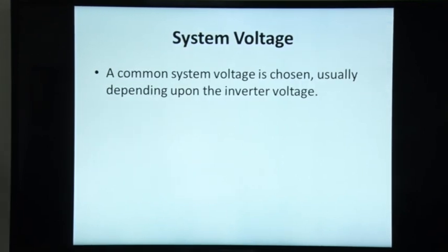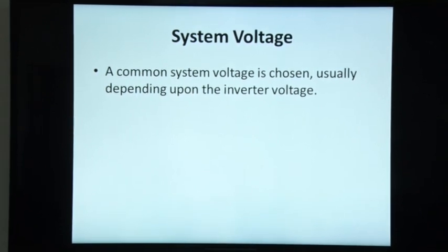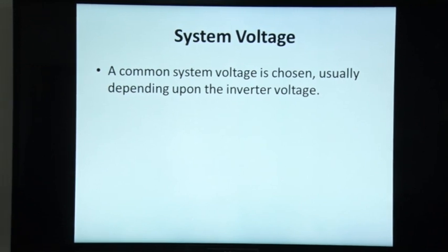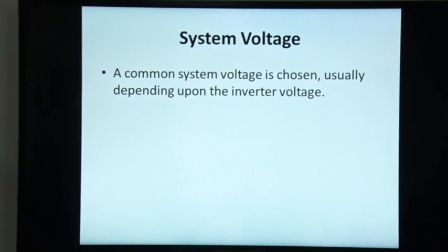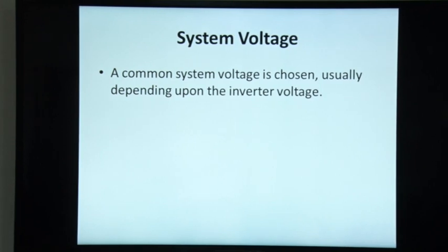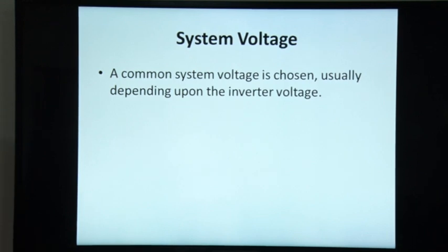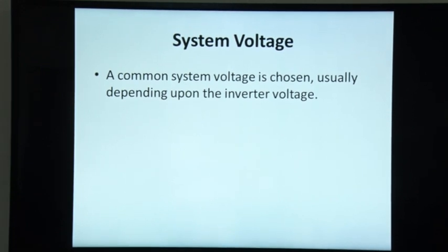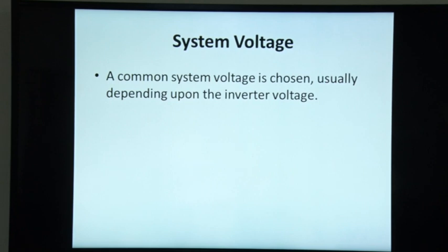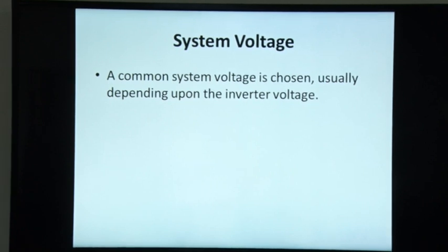The second step in designing a solar system is to decide the system voltage. Various devices like PV panels, batteries, and inverters can be operated at different voltages such as 12V, 24V, 48V, or 96V. For the system to work efficiently, a common voltage should be selected such that all devices operate at this voltage.